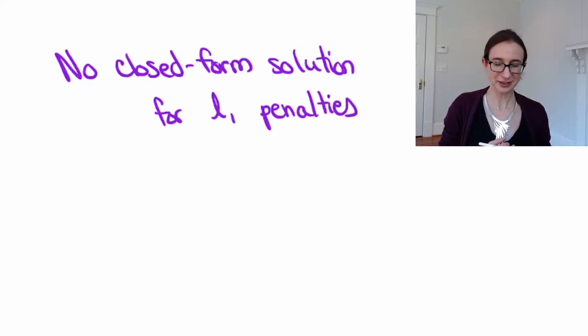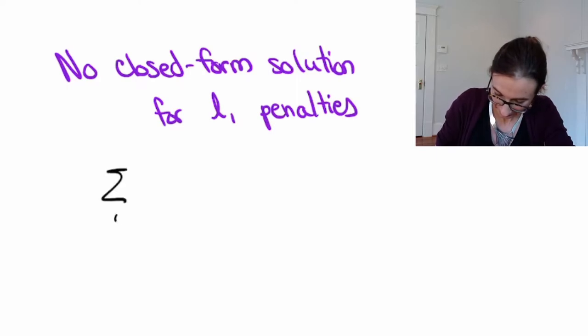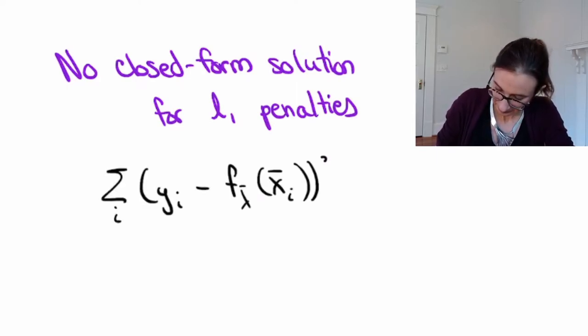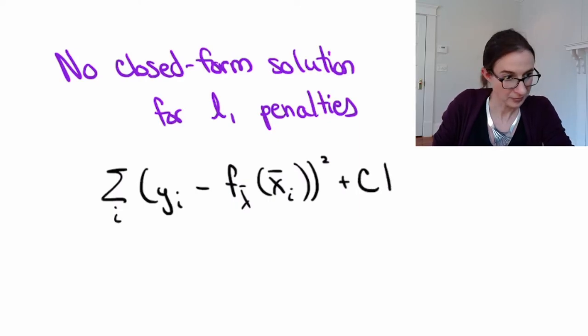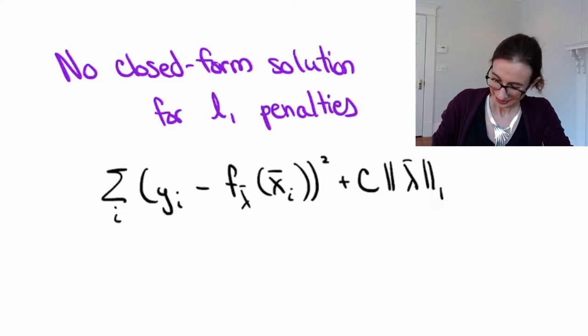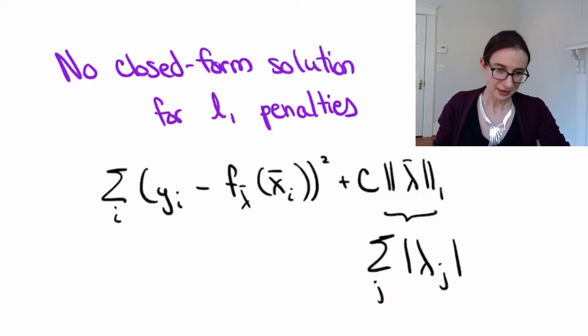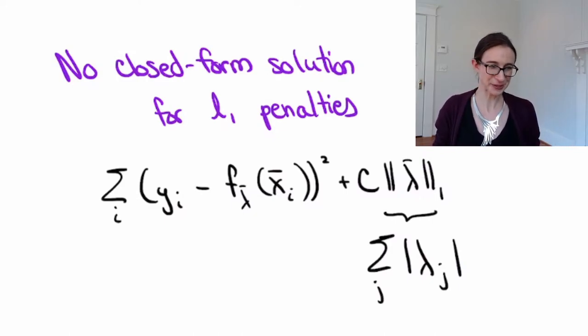So I'm just going to write down the least squares problem but with an L1 penalty. Where of course this is just the sum of the absolute values of the lambdas. But here there is no closed form solution so there's no math to do here.